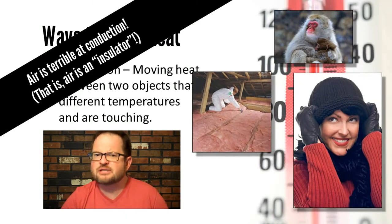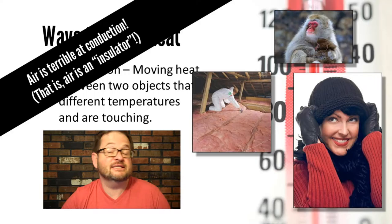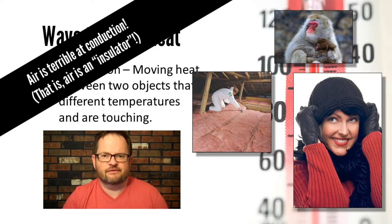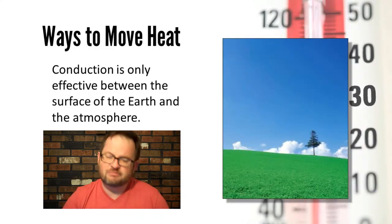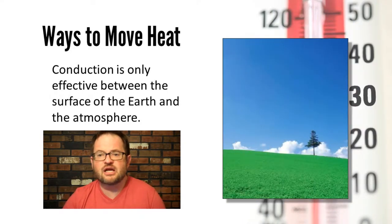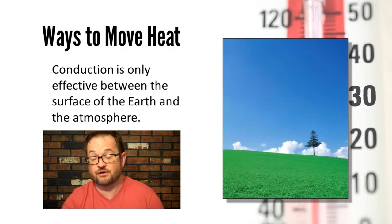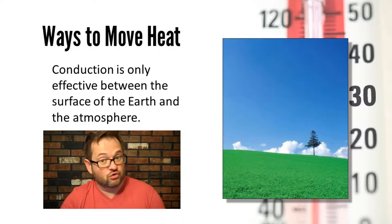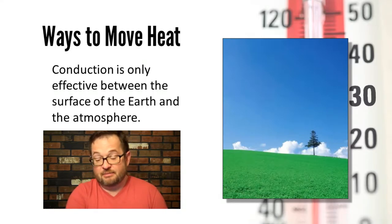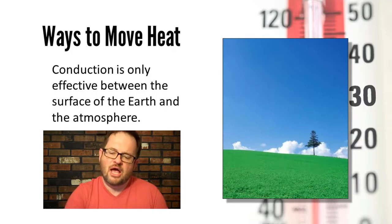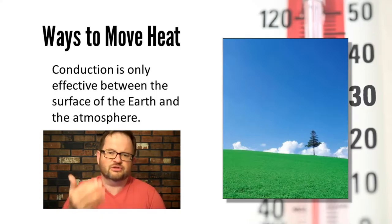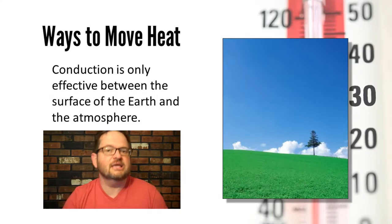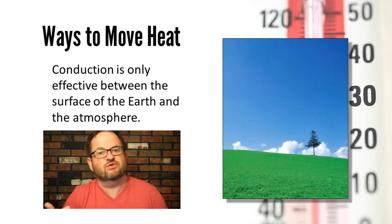Air is actually terrible at conduction — technically, air is considered an insulator, meaning that it resists the flow of heat. However, conduction can be important in the Earth's atmosphere. Conduction of heat between the Earth's surface and the atmosphere is actually relatively efficient. So if the ground is warm but the air is cool, the atmosphere is pretty good at picking up heat from the ground by conduction. If you have a cold wind blowing over a warm field, the air will warm up relatively quickly by conduction.